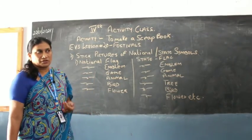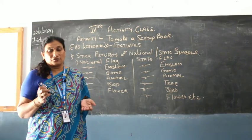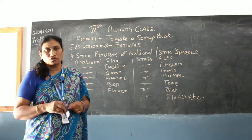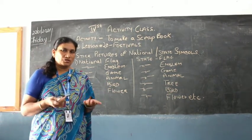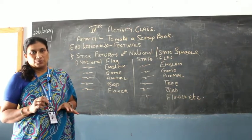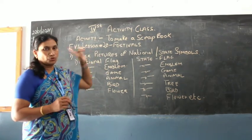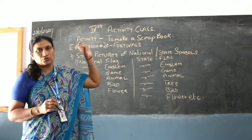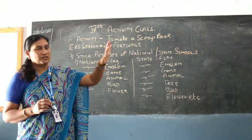You have to make a scrapbook, children. You don't have to go and buy anything new — you can take any of your old drawing books or any old notebook. Cover it neatly with a colored paper, write 'Scrapbook' on top, and then write your theme on the top: 'Festivals' — specifically, national festivals.